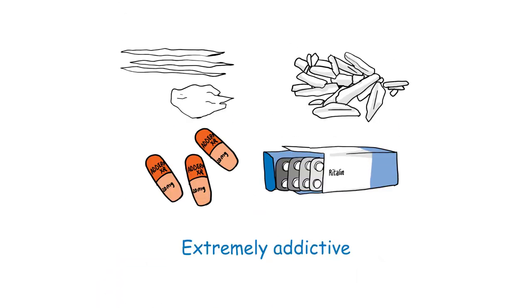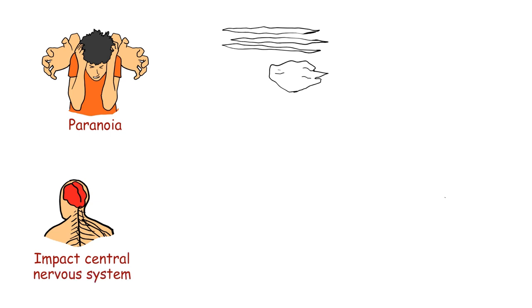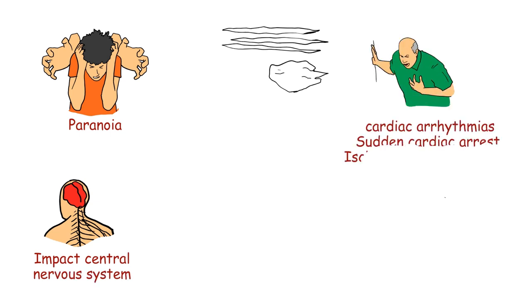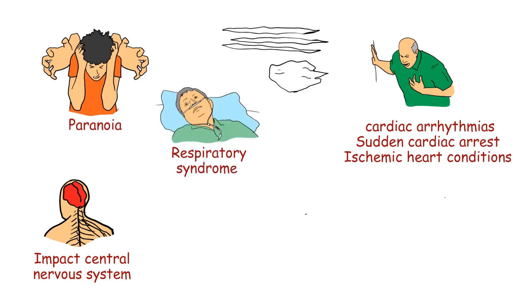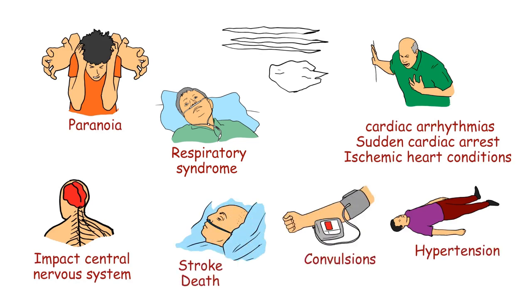Stimulant drugs are extremely addictive due to the way they impact dopamine levels and affect the limbic reward system. Regular cocaine abuse can lead to paranoia and negatively impact functions of the central nervous system, causing cardiac arrhythmias, sudden cardiac arrest, ischemic heart conditions, a respiratory syndrome unique to snorting cocaine, hypertension, convulsions, stroke, and death.